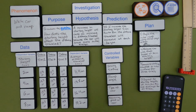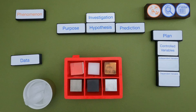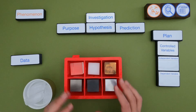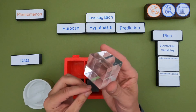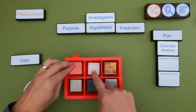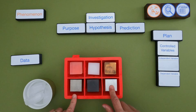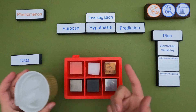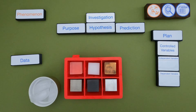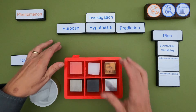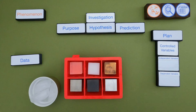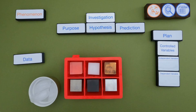Now you're going to have a chance to do one of these on your own. I've got a new phenomena for you — different materials in this ice cube tray: acrylic, nylon, copper, tungsten, PVC, and aluminum. I've also got some ice cubes, six in total. I'd love for you to identify the phenomena, come up with a purpose, hypothesis, prediction, controlled variables, independent variable, and what data you're going to collect. Then unpause the video and come back to see how our ideas compare.